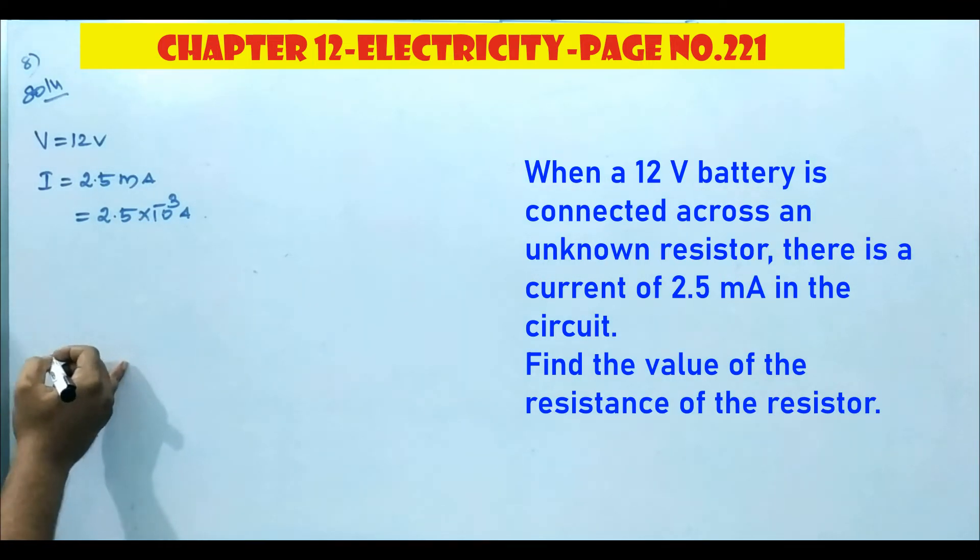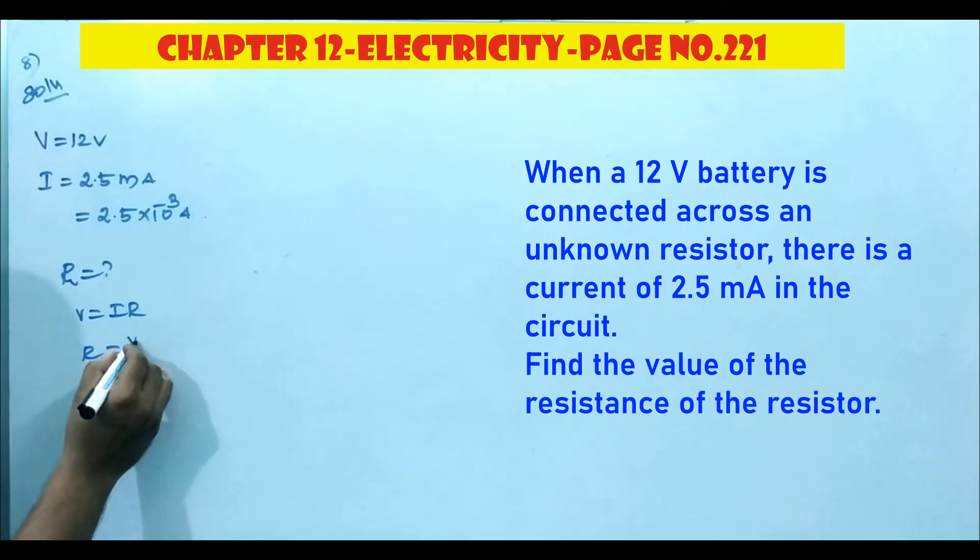Find the value of resistance of the resistor, the unknown resistance we have to find. R is equal to what? We have the formula V is equal to IR, then R is equal to V by I.